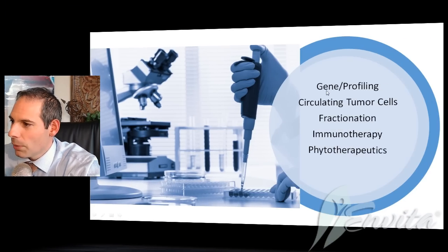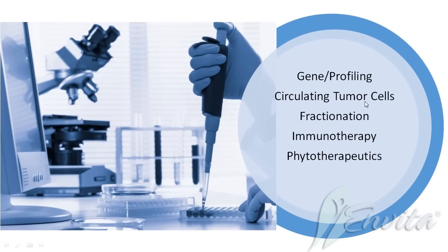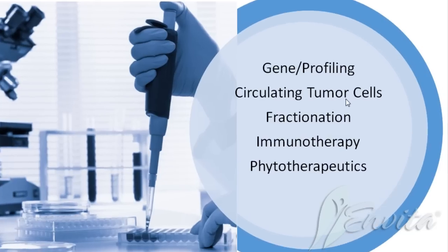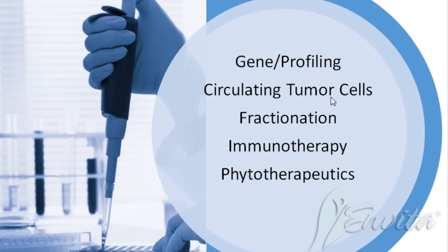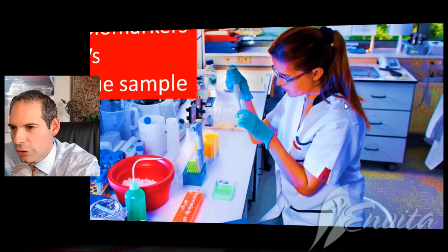It's just not being offered to patients inside the United States in an organized format. The first thing I want to bring to attention is these simple points: gene profiling, circulating tumor cells, fractionation, immunotherapy, and phytotherapeutics. Every one of these is how we're very different than the conventional. The first part is genetics and biomarkers.